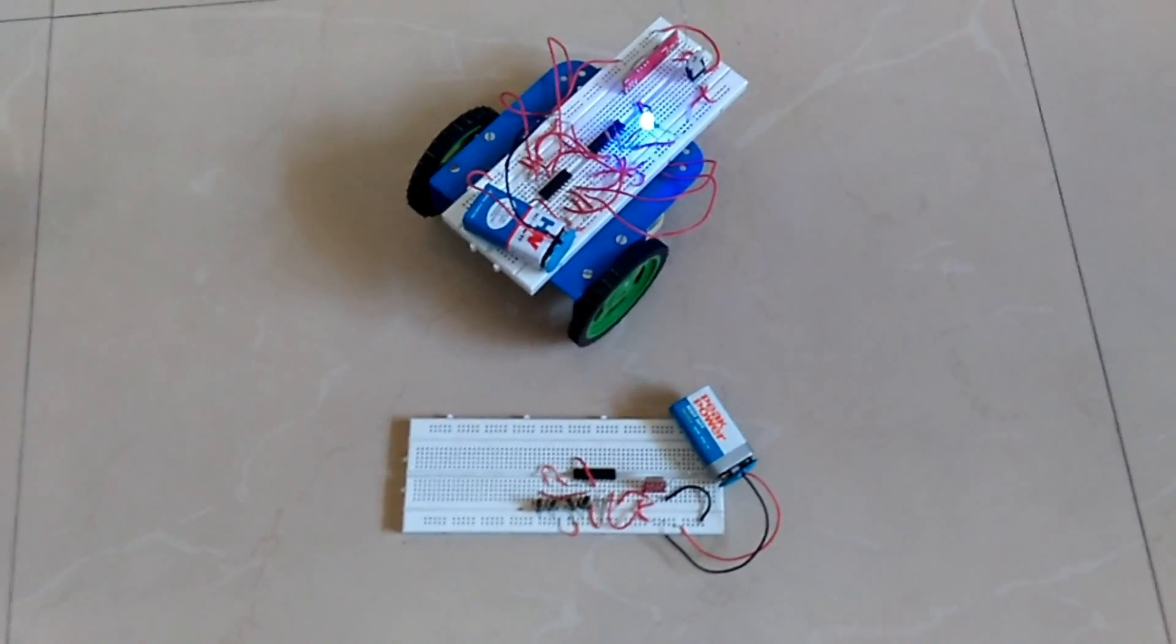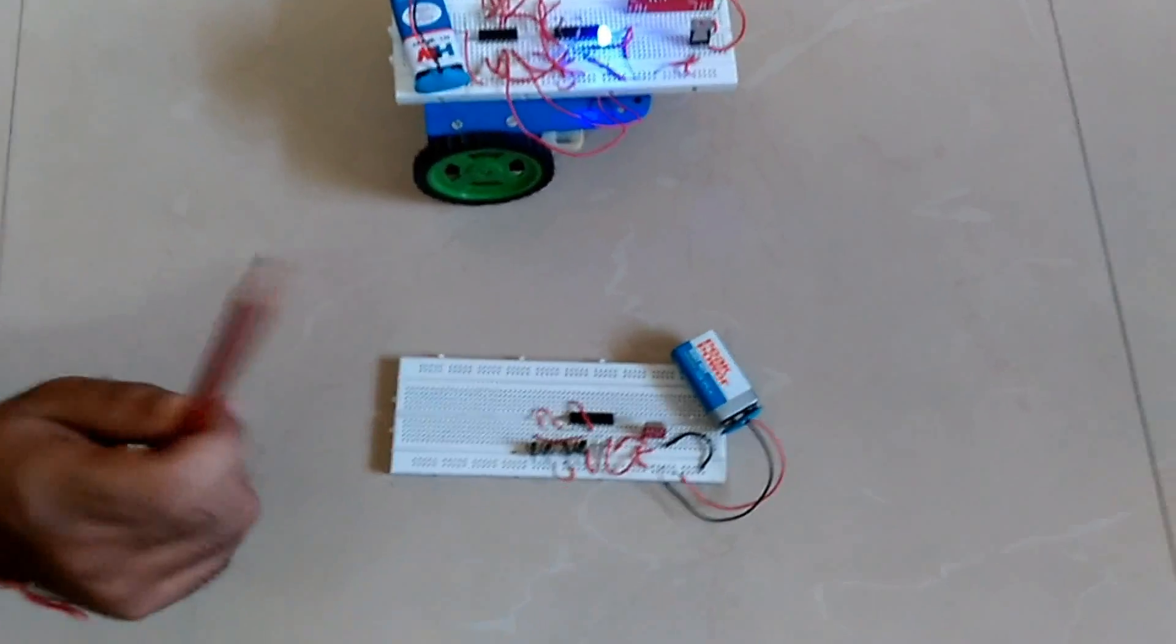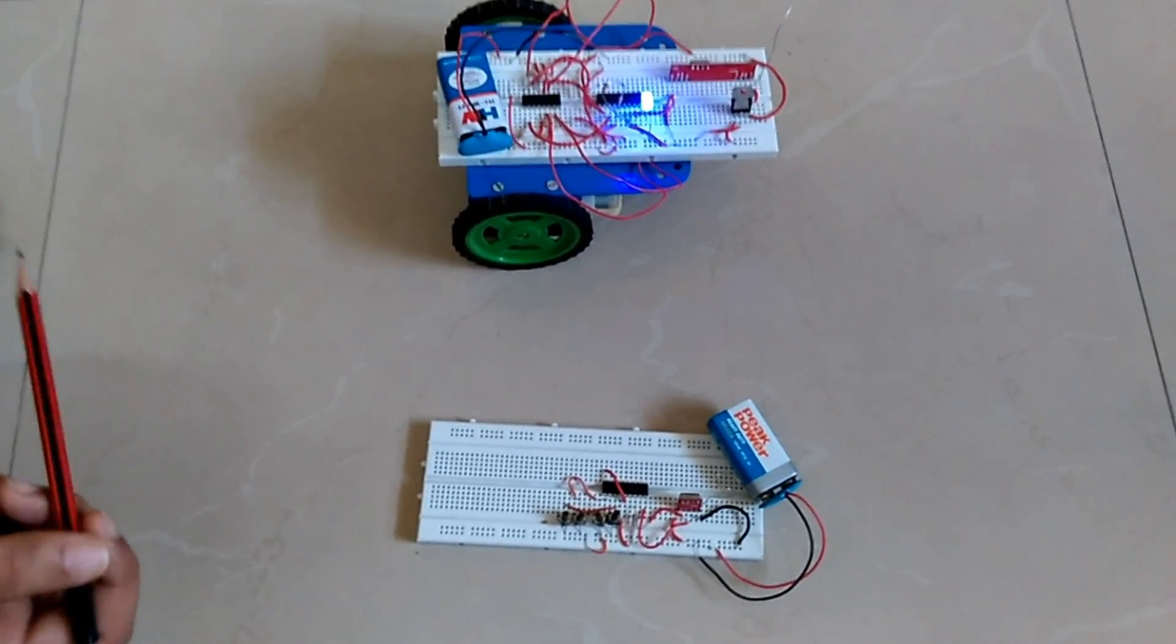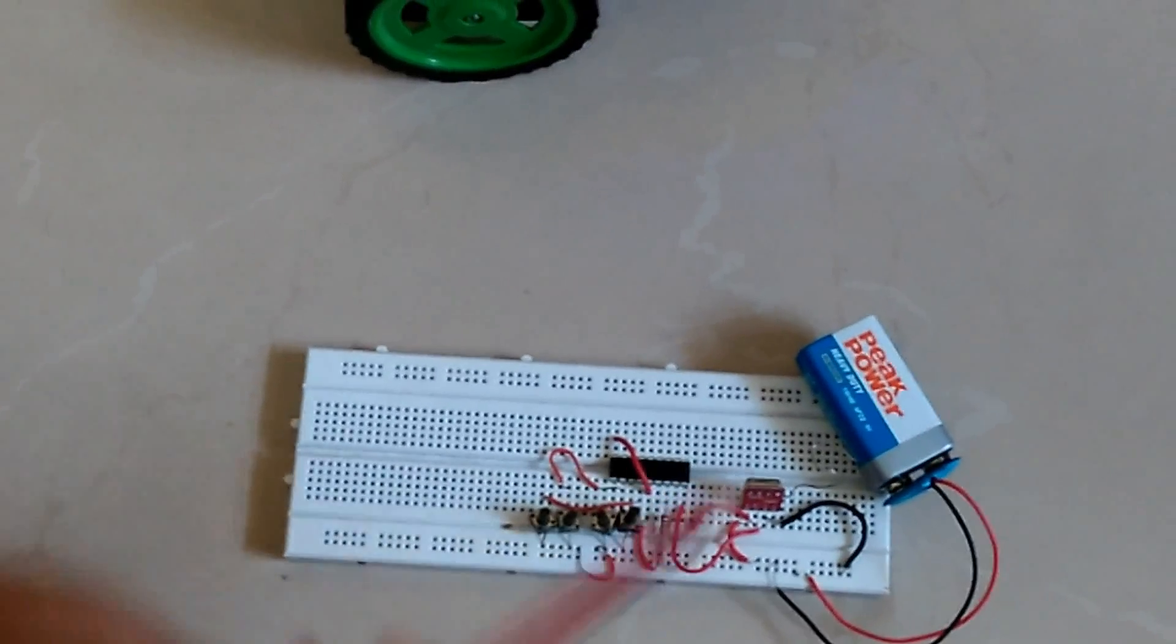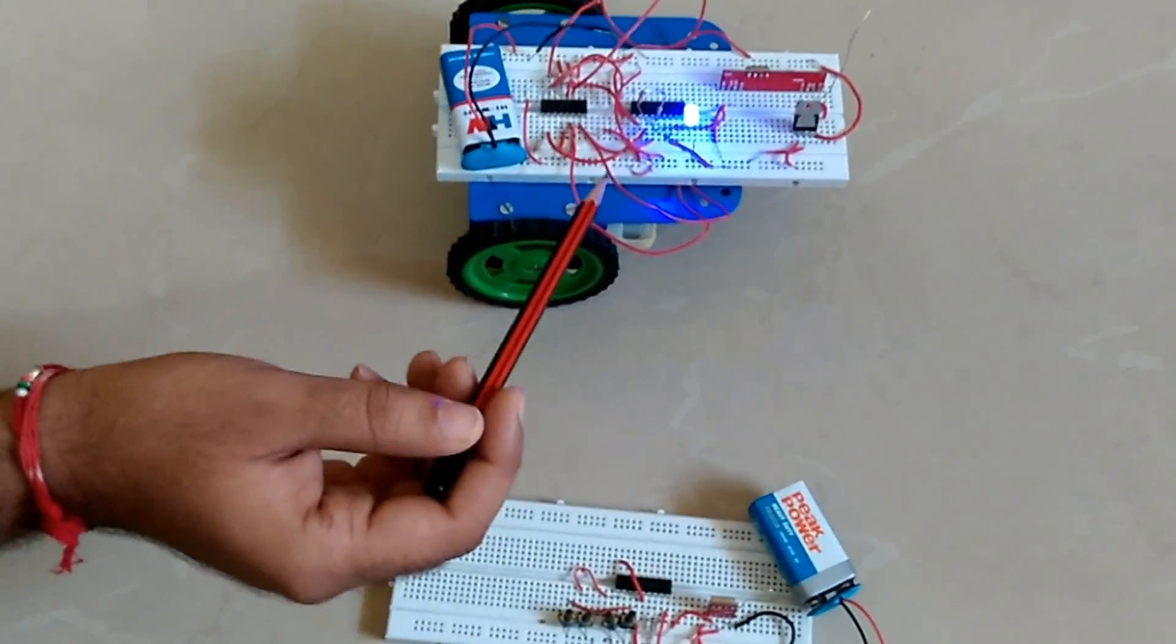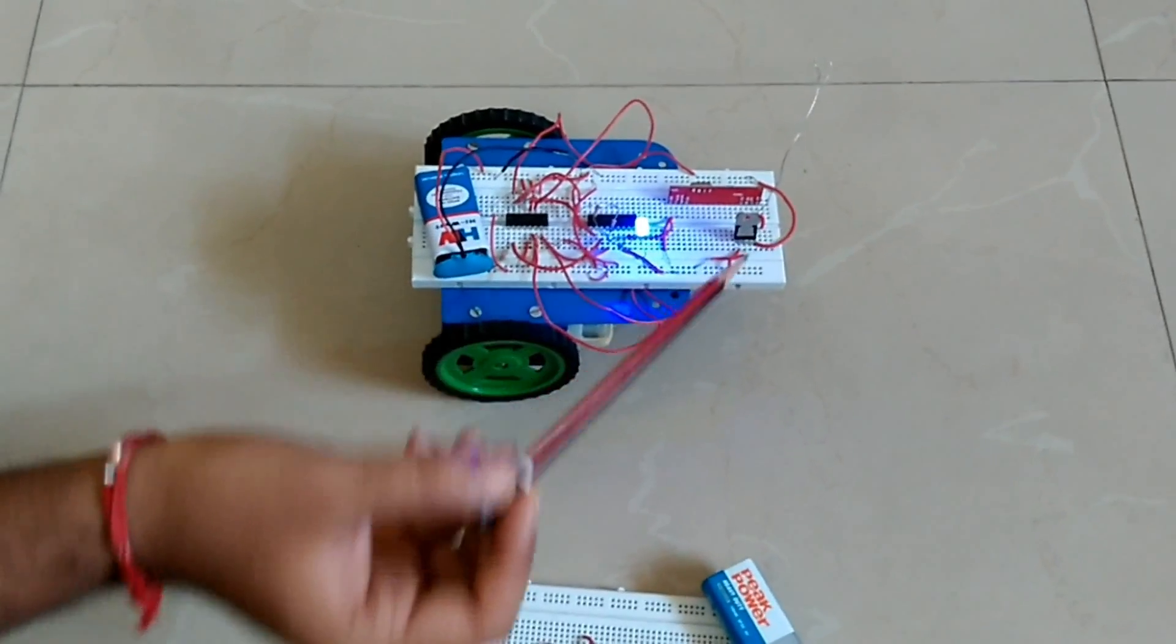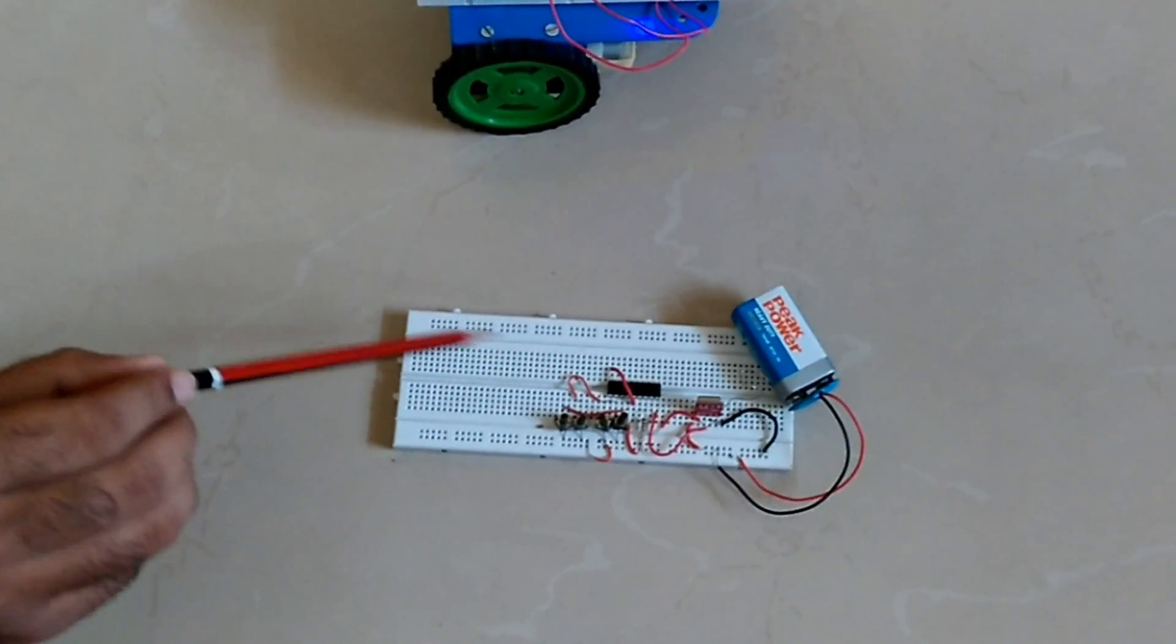So let's start. First let me tell you what are these components. Starting with this, we have these two 9 volt batteries, these tactile switches, then we have this encoder IC, this decoder IC, we have these RF modules - these are used for wireless transmission, then we have this motor driver L293DNE and then this voltage regulator 7805.